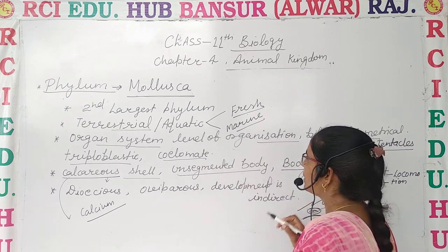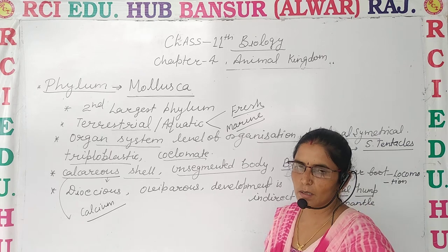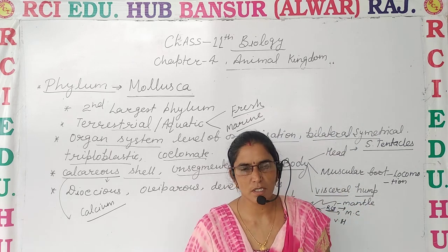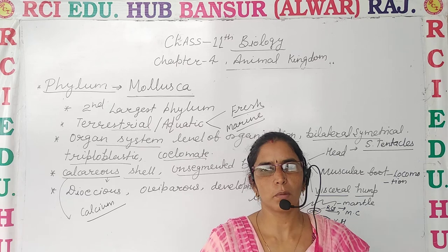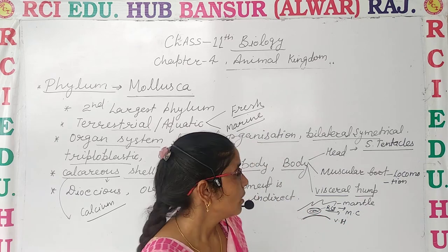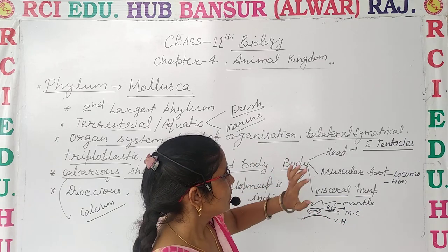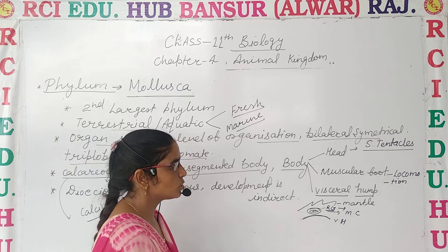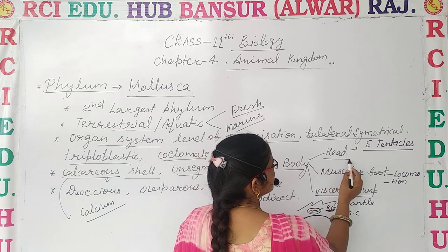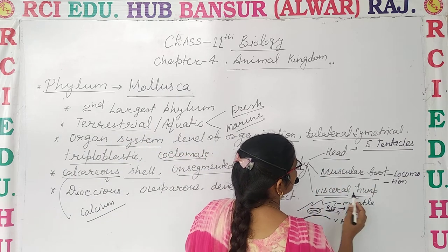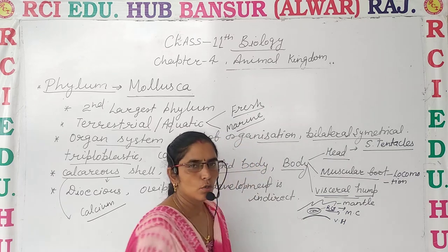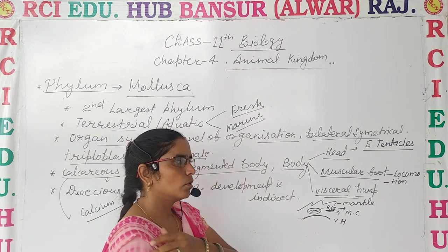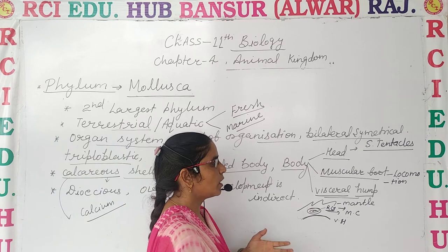The body can be divided into three parts. Just as we studied in Arthropoda that the body is divided into head, thorax, and abdomen — here the body is also divided into three parts, but those three parts are different: head, muscular foot, and visceral hump.